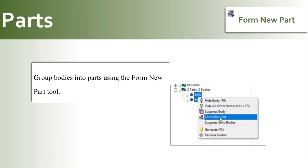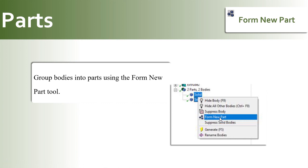You can group bodies into parts using the Form New Part tool. To form a new part, select one or more bodies from the graphic screen and use the context menu option Form New Part (right mouse button). The Form New Part option is available only when bodies are selected and you are not in a feature creation or feature edit state. Parts can also be created by selecting one or more bodies from the tree outline and clicking Form New Part in the Tools menu.